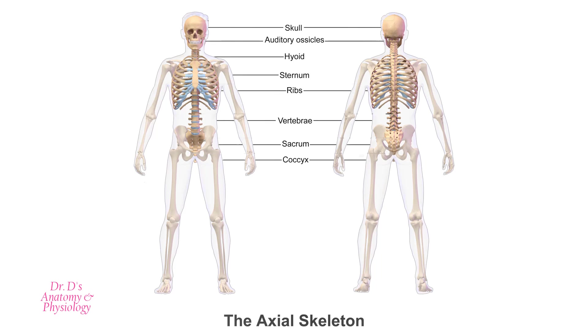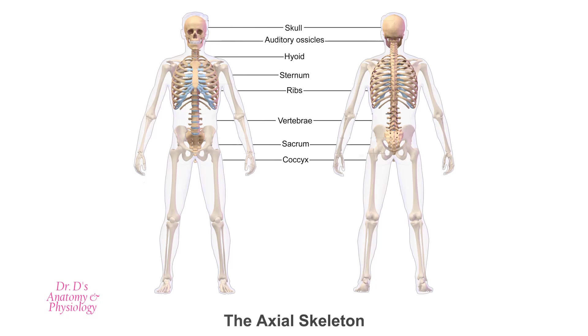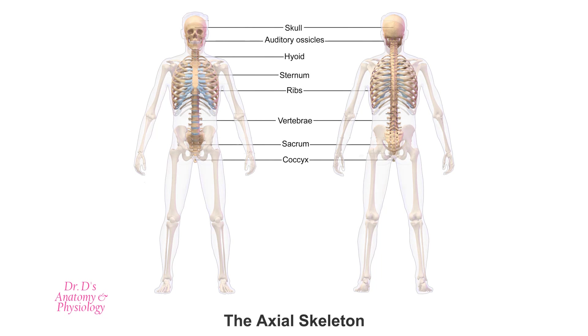The axial skeleton is the part of the skeleton which forms the central part, the axis so to speak. The appendicular skeleton are the attachments to this axis — the upper and lower limbs.